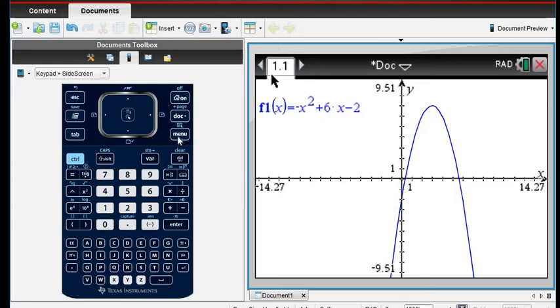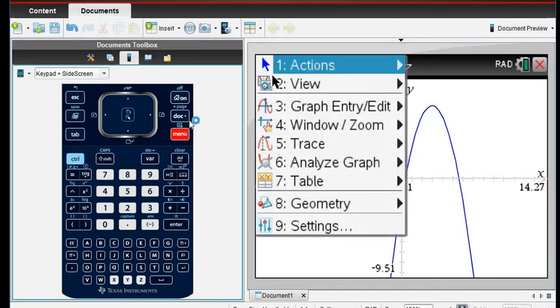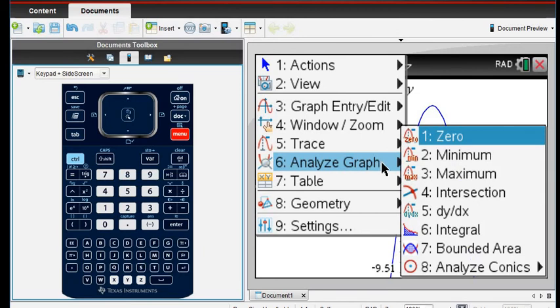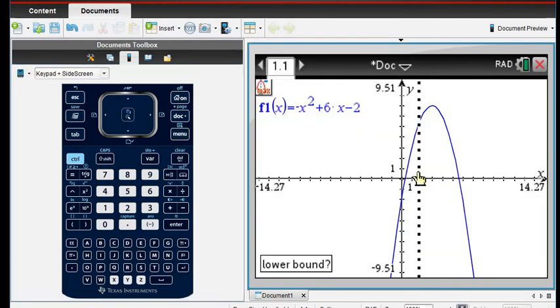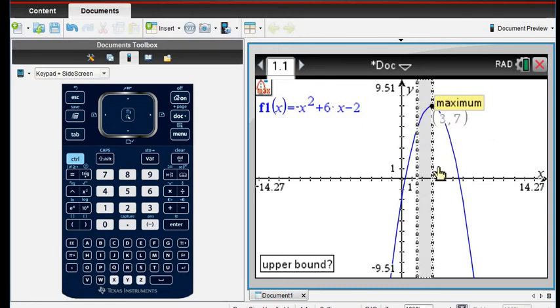So to get to the screen to find the maximum, we're going to go to menu, and we're going to analyze graph. So option 6, and then we're going to go to option 3, which is the maximum. The lower bound means that it's just to the left of the turning point. So it's the lowest part of your interval that you're finding.